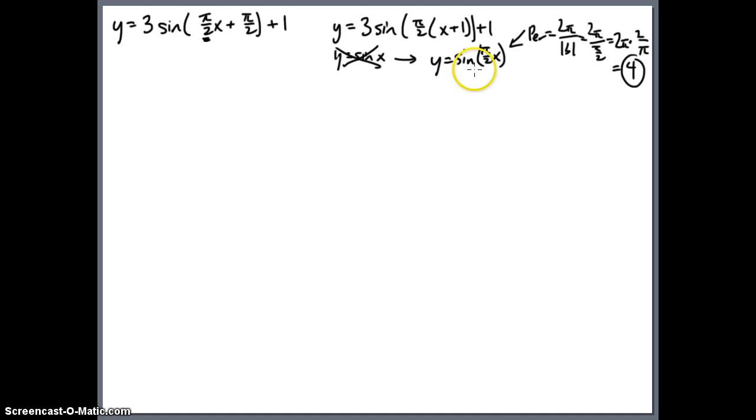So we'll first graph this, basically the sine graph, but using a period of 4. Then we'll graph sine of pi over 2 times the quantity x plus 1. And so this plus 1 is going to end up being a shift to the left by 1, right? The plus is the sort of counterintuitive shift the other direction.